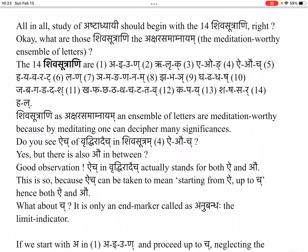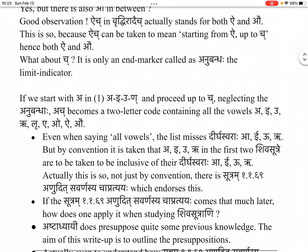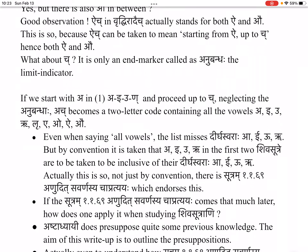If we start from 'a' in Shiva-sutra 1 and proceed up to 'c', neglecting the anubandha, 'ac' becomes a two-letter code containing all the vowels: a, i, u, ṛ, ḷ, e, o, ai, au. Even when saying all vowels, the list misses the dīrgha-svarāha — ā, ī, ū, ṝ. But by convention, it is taken that a, i, u, ṛ in the first two Shiva-sutras are to be taken inclusive of their dīrgha-svarāha ā, ī, ū, ṝ. Actually, this is supported not just by convention, but by sutra 1.1.69 — ānudeśa-savarṇasya cha pratyayaḥ.